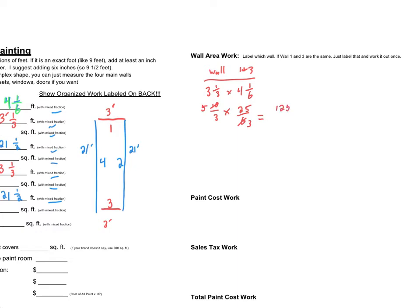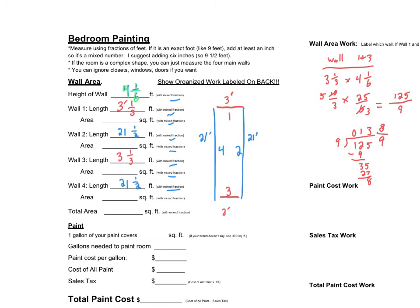So now I'm multiplying straight across. 5 times 25. Well, if you have 5 quarters, that's a dollar 25. So 125. 3 times 3 is 9. So my answer is 125 ninths. I need to change that to an improper fraction by dividing. Divide, multiply, and subtract. Bring it on down. Bring it on back. So my answer is 13 with a remainder of 8. So 13 and 8/9. So that wall is 13 and 8/9.